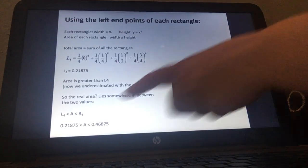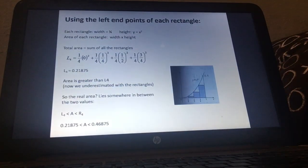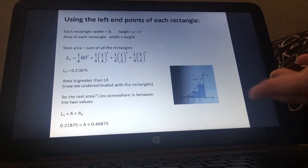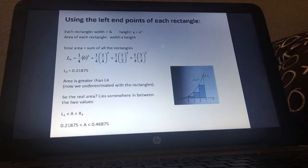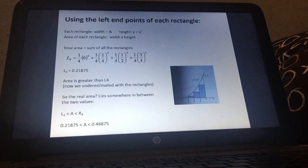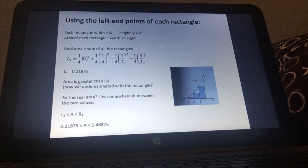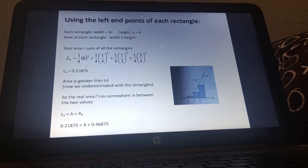So what's the real area? Well we know it's somewhere in between the two right? So the real area L is for left R is for right. So the real area using the left side you underestimate using the right you overestimate. So the real area is somewhere in between the two. So that's the method that we use.